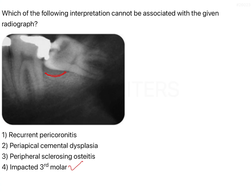The maxillary teeth impinge on this soft tissue growth, causing trauma to it. As a result, the patient starts complaining of pain — first due to edema and irritation from food lodgment, and secondly because the maxillary tooth continuously hits the soft tissue. This entire soft tissue growing on top of the tooth is called a pericoronal flap, and the whole situation is called pericoronitis.